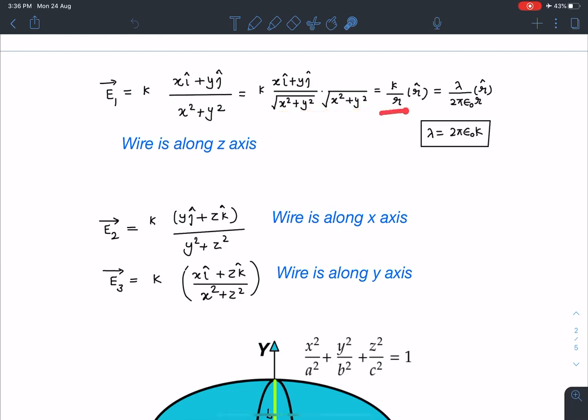So I can write it as k by r times r cap. This resembles the field of an infinitely long uniformly charged wire. So I can compare these coefficients and I'll be getting the value of lambda in terms of k which is 2 pi epsilon 0 k.